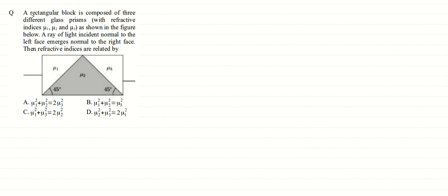In this question, a rectangular block is composed of three different glass prisms with refractive indices μ1, μ2, and μ3. A ray of light is incident normal to the left face, meaning the angle of incidence is zero degrees. Drawing the normal, this ray should go undeviated until it hits the surface of the next prism.